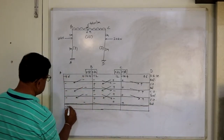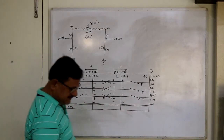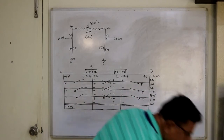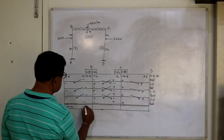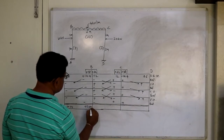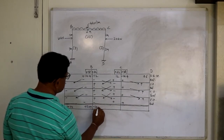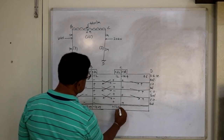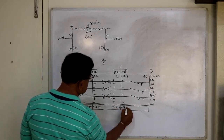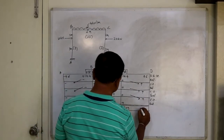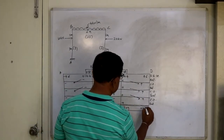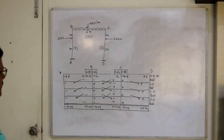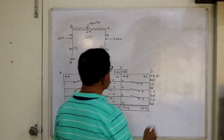The final moments obtained are: minus 10.24, plus 13.09, minus 13.09, plus 13.09, minus 13.09, and plus 10.24 — due to symmetry. Once you get the final moments, construct the BMD as usual.